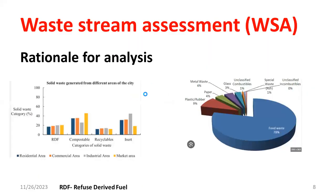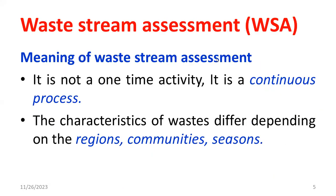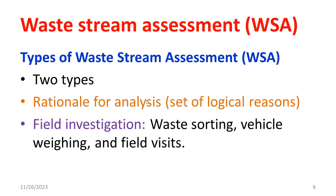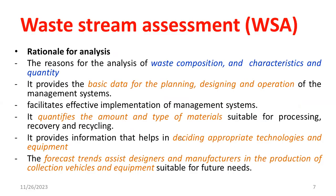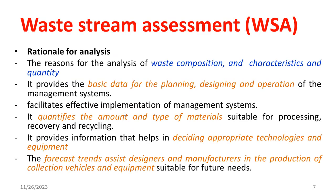In this session, I discussed what waste stream assessment means and its significance. Two types are available: rationale for analysis and field investigation. In rationale for analysis, we do not go anywhere — we collect and analyze information and perform forecasting based on historical data. Field investigation includes waste sorting, vehicle weighing, and field visit, which are real-time methods. These are all the things we discussed in this session. Thank you so much for watching. Happy learning!